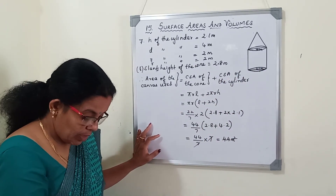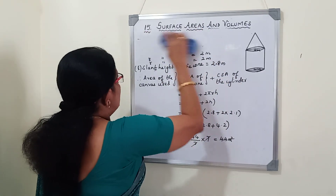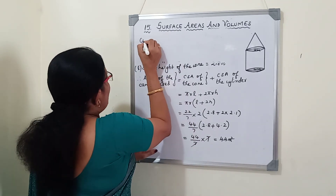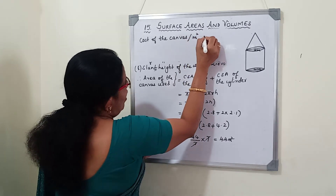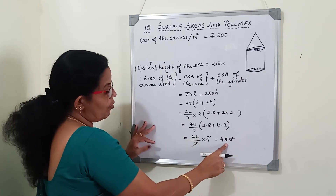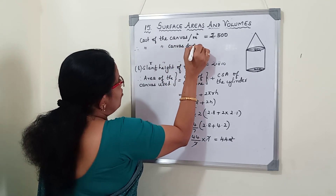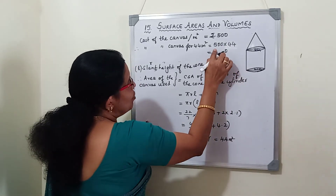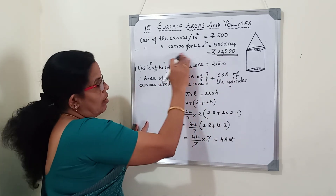The area of canvas used for making the tent is 44 m². Now for the cost: at the rate of ₹500 per m², cost = 500 × 44 = ₹22,000. So ₹22,000 is the total cost of canvas for making this tent.